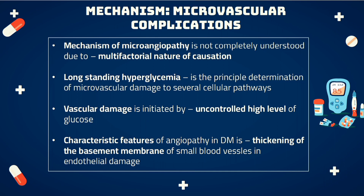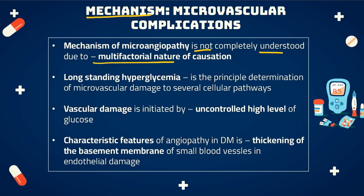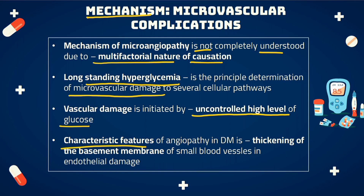Let's discuss the mechanism behind the microvascular complications. The mechanism of microangiopathy is not completely understood, because these complications are not due to a single factor but depend on more than one factor — they have a multifactorial nature. These microvascular complications are produced by long-standing hyperglycemia, which causes microvascular damage through various cellular pathways due to uncontrolled high levels of glucose. The characteristic feature of all these angiopathies is thickening of the basement membrane of various small blood vessels.